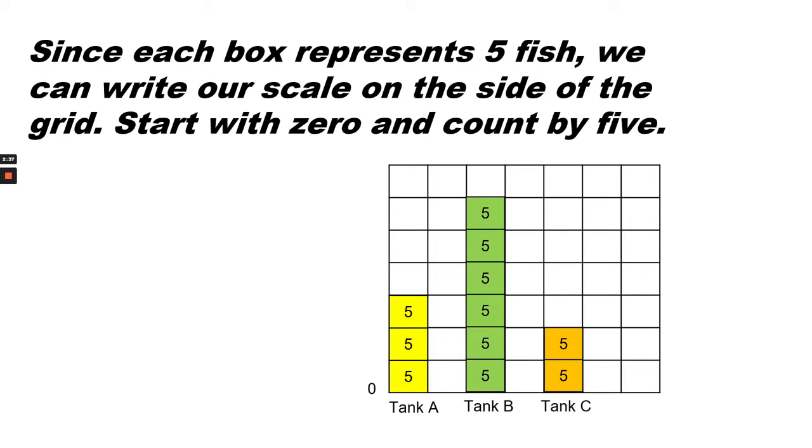Since each box represents 5 fish, we can write our scale on the side of the grid. Start with 0 and count by 5.